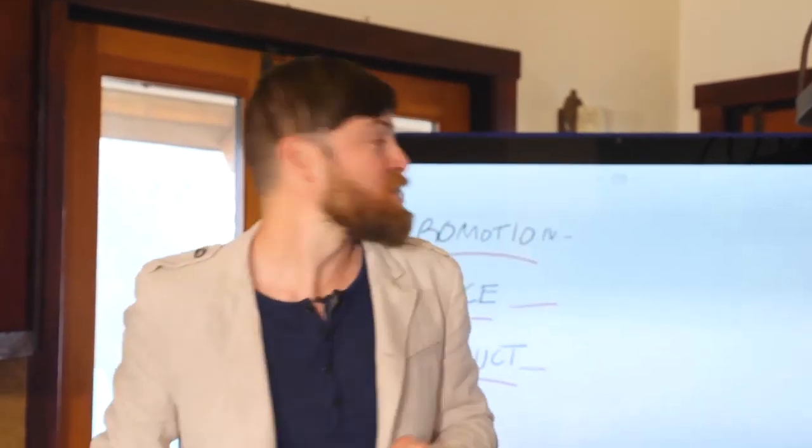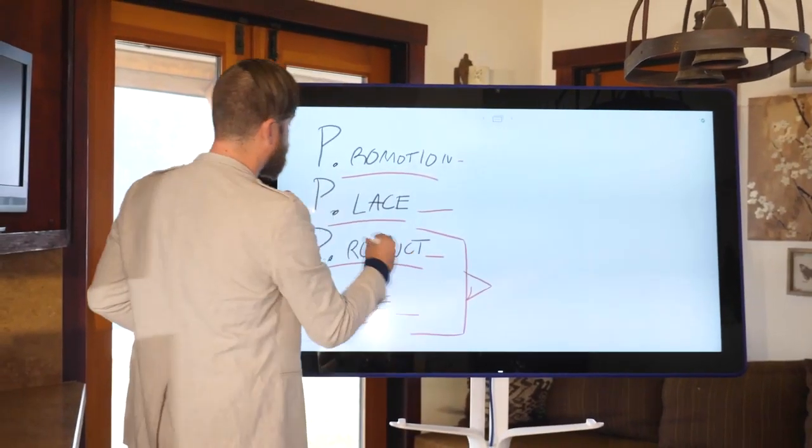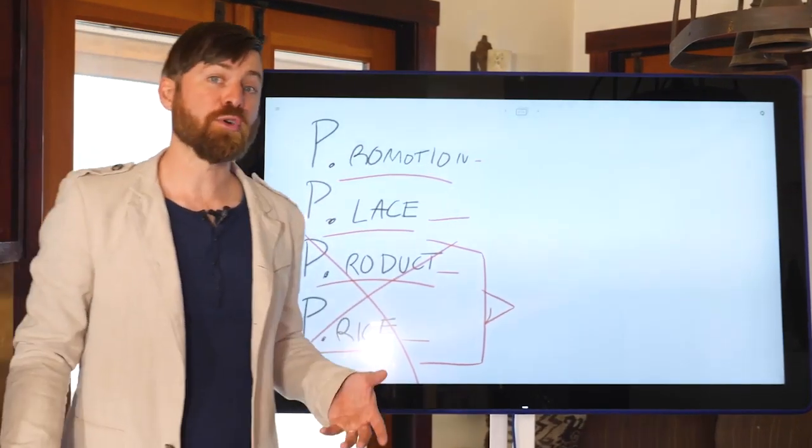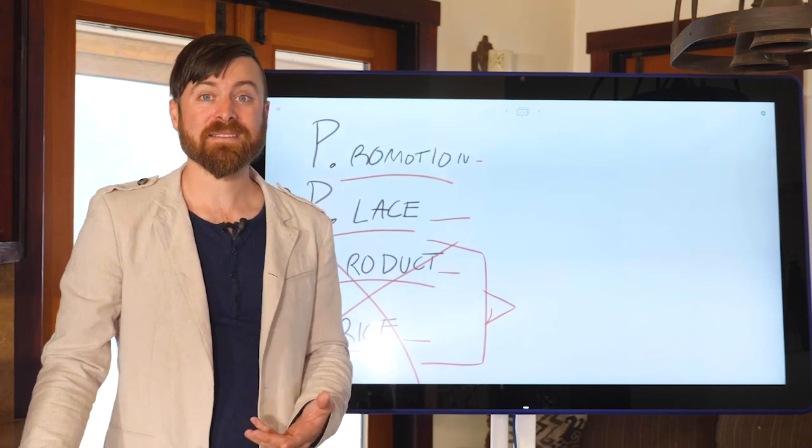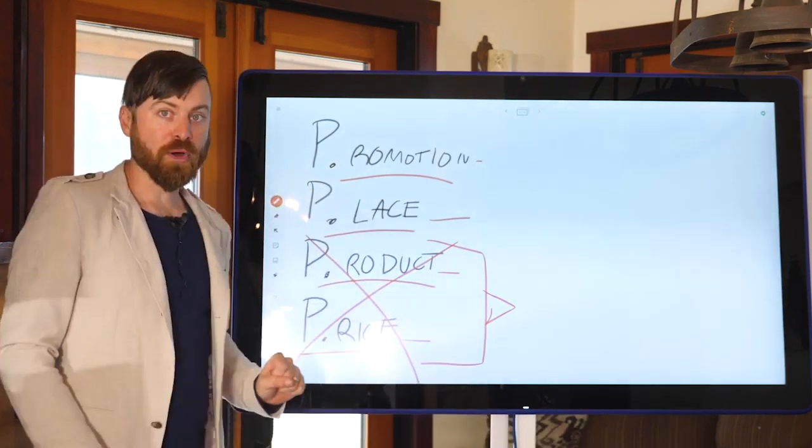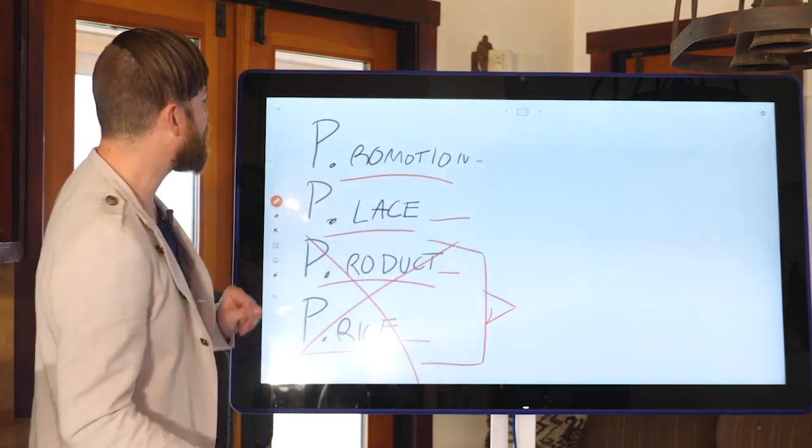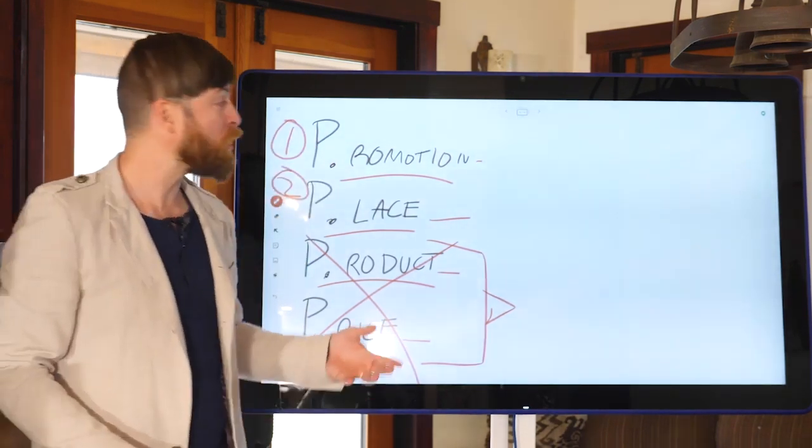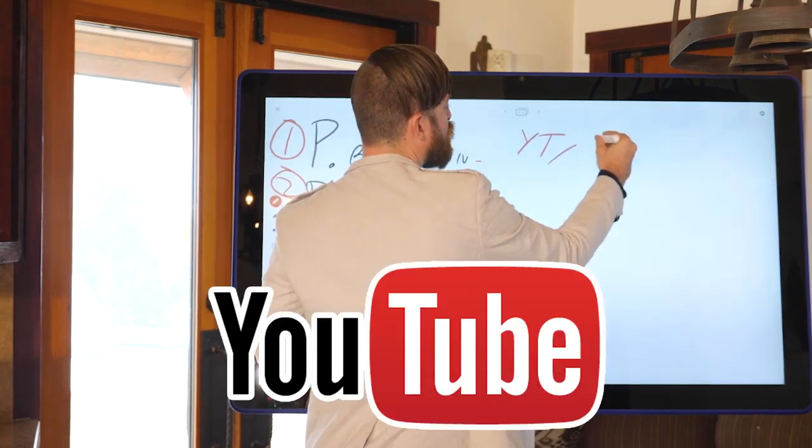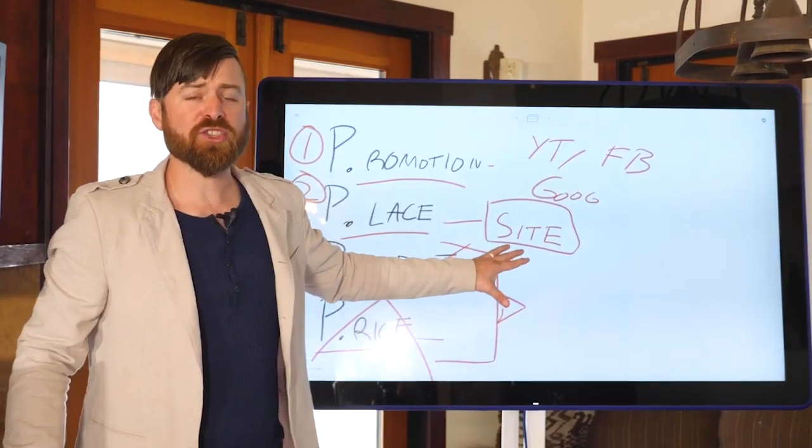There's a way where you really only have to focus on two of these marketing elements. That's called affiliate marketing. Affiliate marketing essentially takes out these two elements out of the equation. You don't have to worry about product and you don't have to worry about price because another person has already done it for you. All you have to focus on is the promotion and the place. All you have to do is post on YouTube, Facebook or Google and set up a website in which people land on.